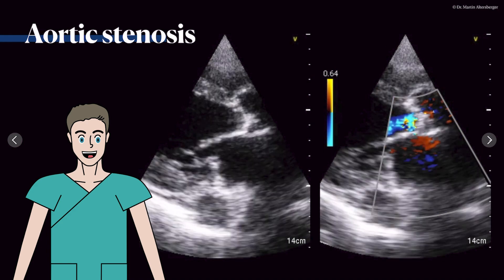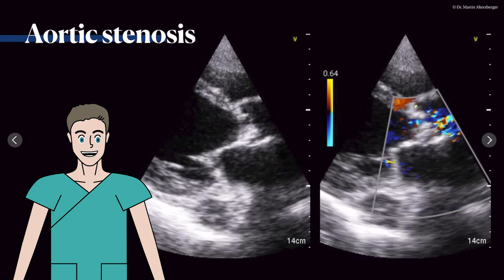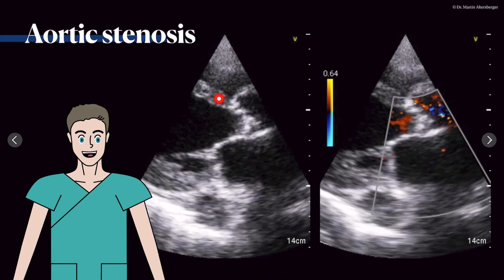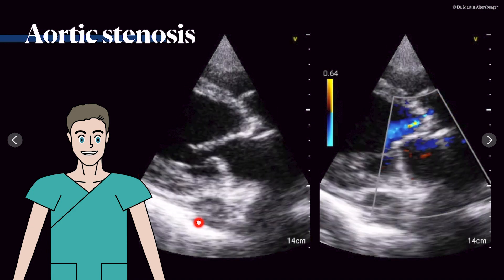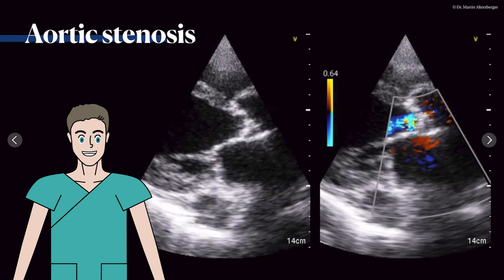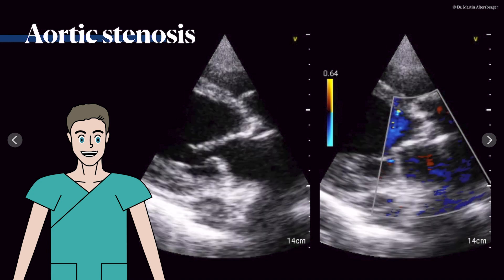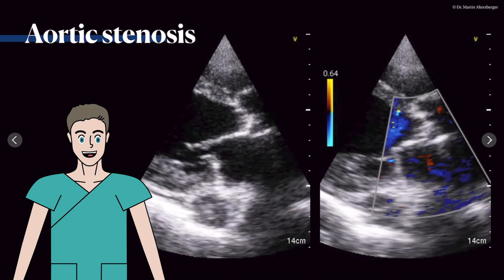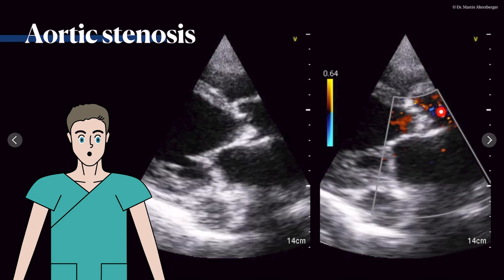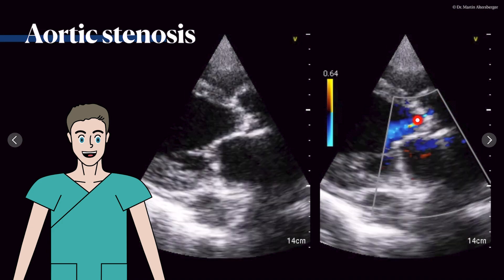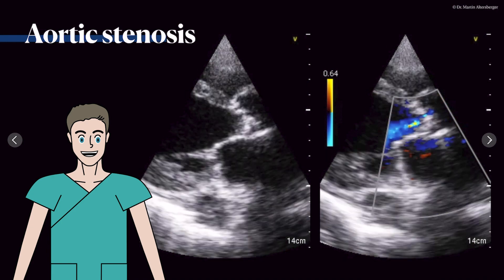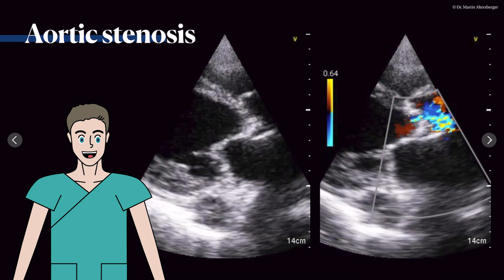We take a point-of-care ultrasound device and image a parasternal long axis view, with and without color Doppler. We can appreciate the right ventricle, the interventricular septum, the inferolateral wall, the descending aorta, the mitral valve with its anterior and posterior leaflets. In the center of the image is the aortic valve, which is severely calcified. When you add color Doppler, you see turbulent flow and also a little aortic regurgitation. The area where the valve opening should occur shows very turbulent flow, also after the stenotic part.